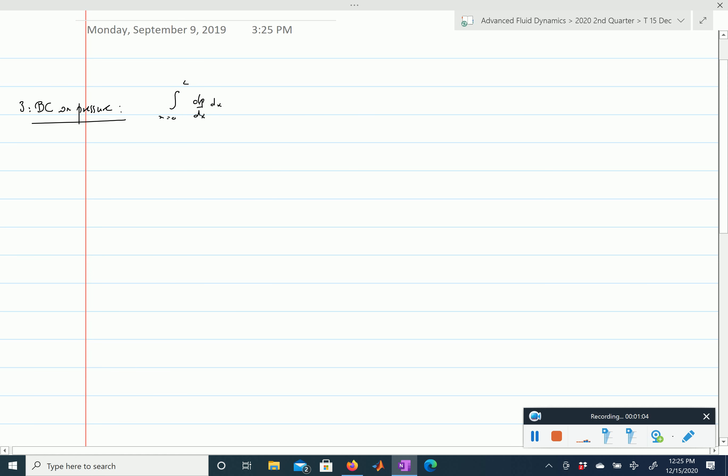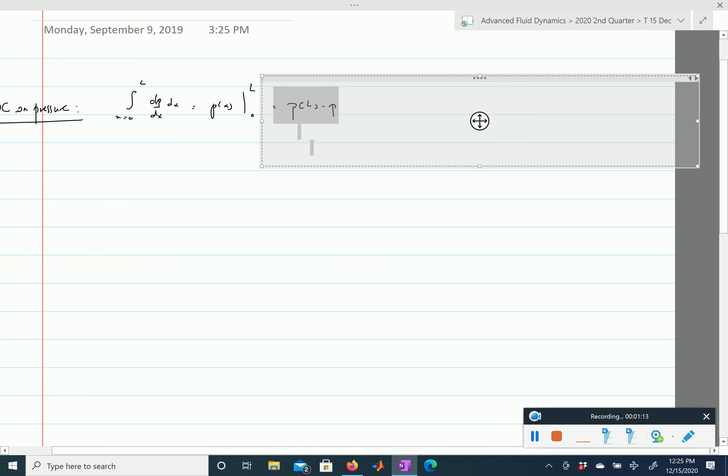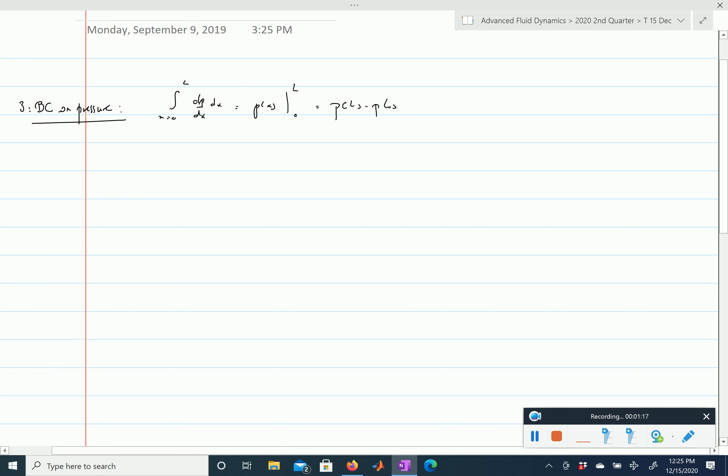So we'll compute the integral from x equals 0 to L of dp dx dx, and so this is going to be equal to the pressure at L minus the pressure at 0. So this is here, our pressure difference between the pressure at L minus the pressure at 0, and that is this integral, and our boundary condition tells us that this number here is equal to 0, because the two are the same.